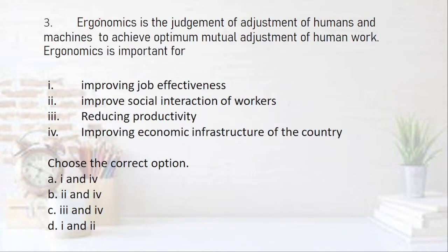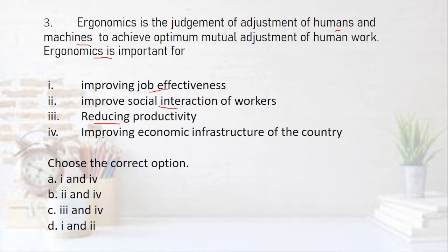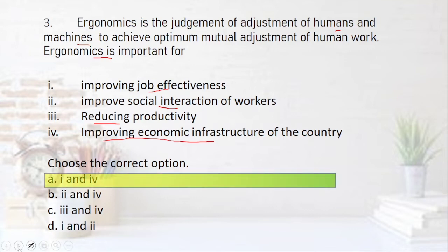Third question: Ergonomics is the science of adjustment of humans and machines to achieve optimum mutual adjustment of human work. We have to identify the importance of ergonomics. 'Improving job effectiveness' — yes, that is correct. 'Improve social interaction' — I don't think this is the primary aim of ergonomics, as it basically deals with humans and machines. 'Reducing productivity' — nothing would be aimed at reducing productivity. 'Improving economic infrastructure of the country' — obviously if job effectiveness is more, production is more, and so the economic infrastructure improves. So the right option is the first and the fourth. You have to read all four to find the best two correct options.